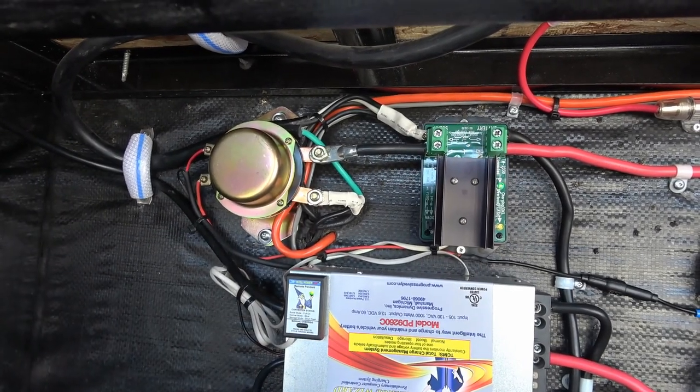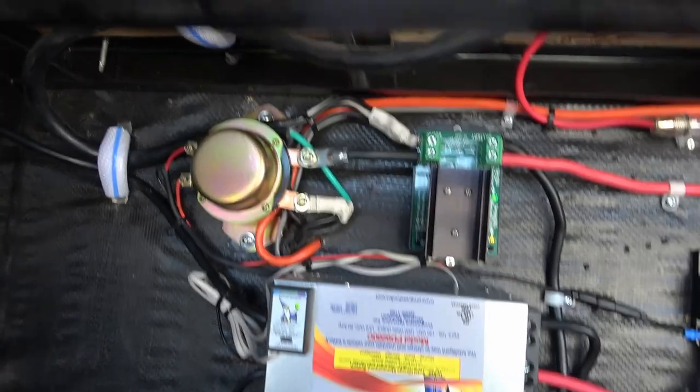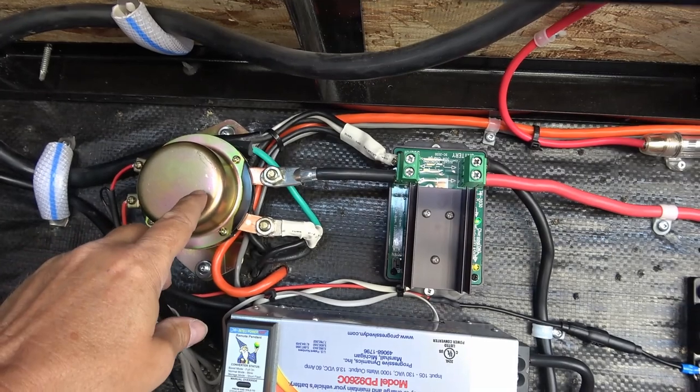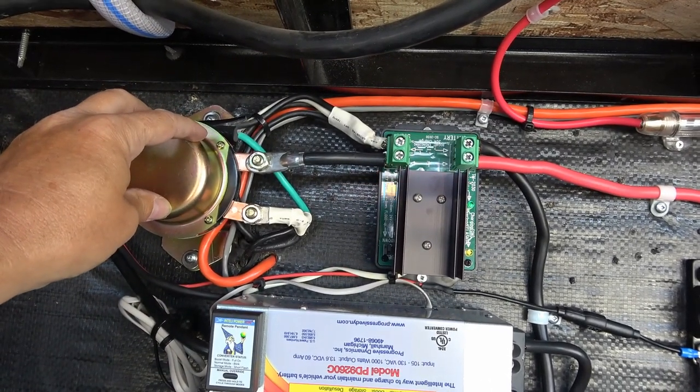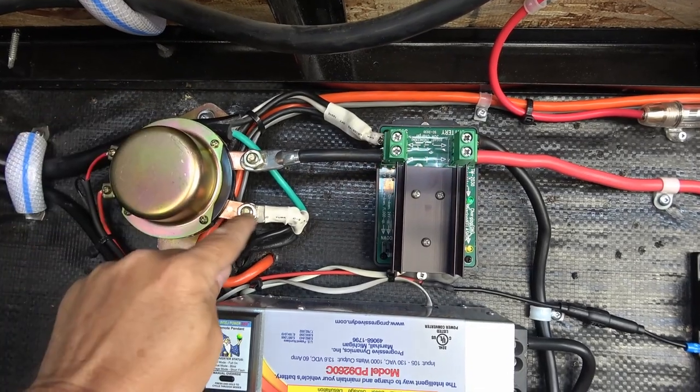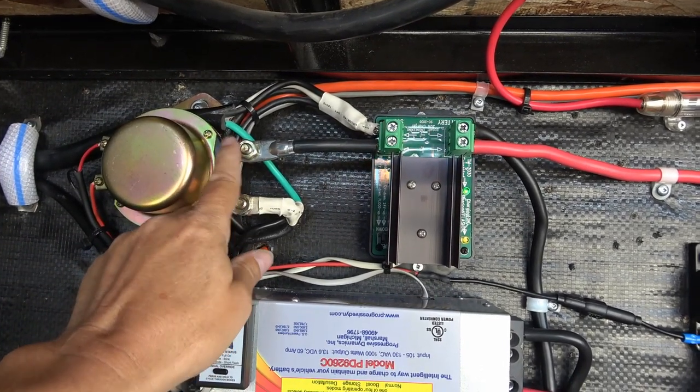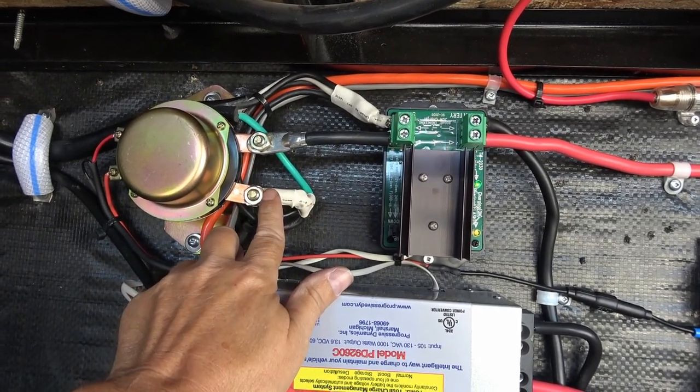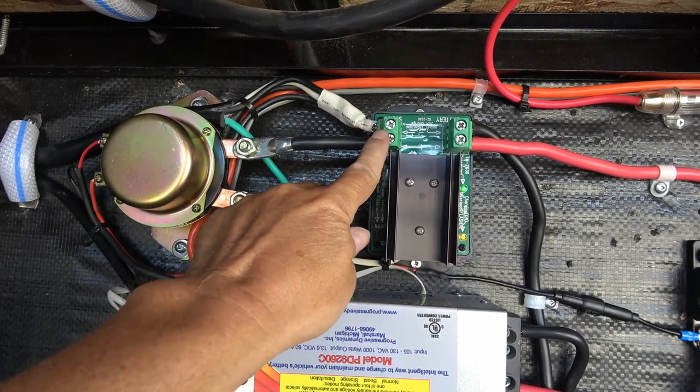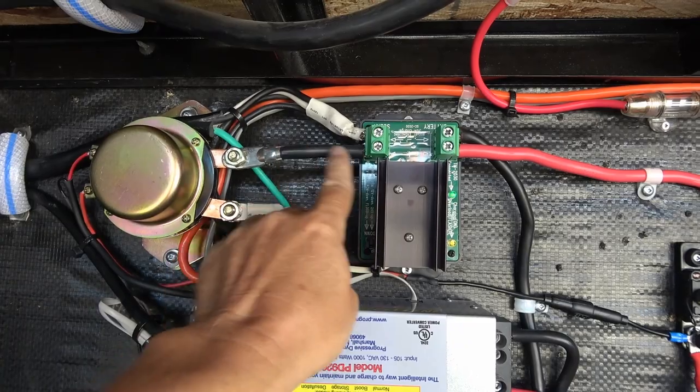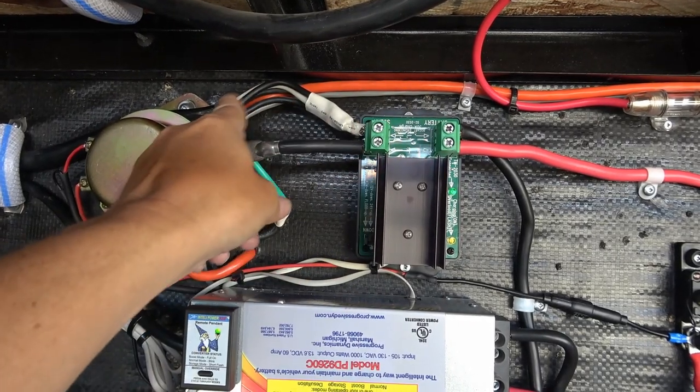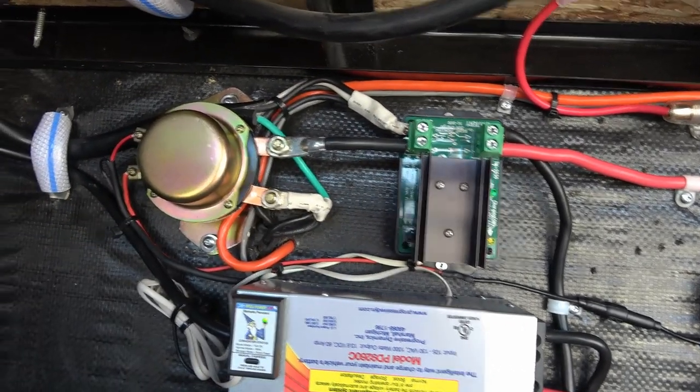Here's my solar coming in. I have the five panels wired in parallel, so they're all coming in here through here and then into the Bogart solar controller. So that's my main solar positive coming in and there's the negative wires up there.